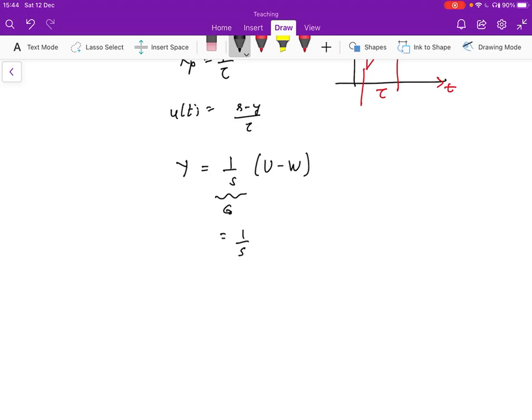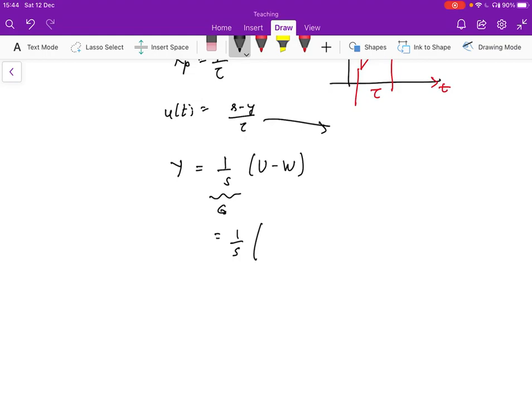So Y is going to be G times U minus W. And so it's going to be one over S. And U, we are going to compute as the Laplace transform of that.